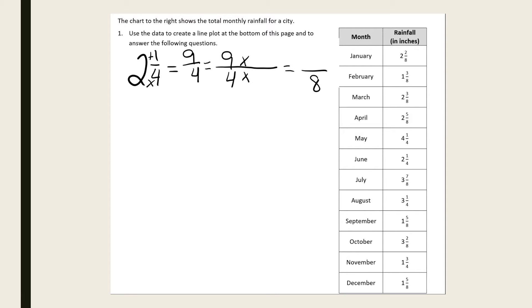4 times something equals 8, and we know that is 2. And what you do on the bottom, you have to do on the top. So 9 times 2 is 18.